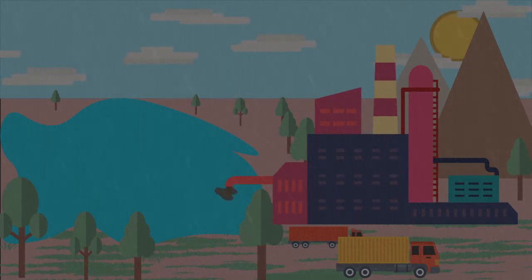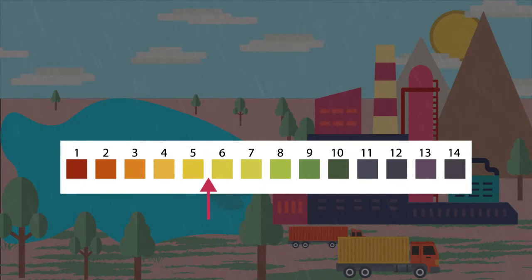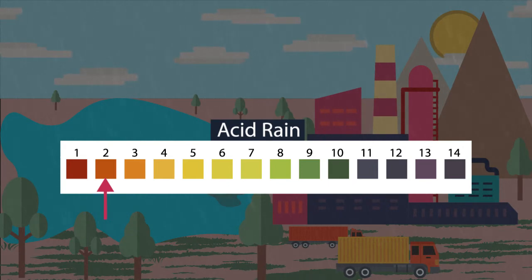Normal rainwater is slightly acidic. It has a pH of 5.6. If the rainwater has pH less than 5.6, then it is considered as acid rain.